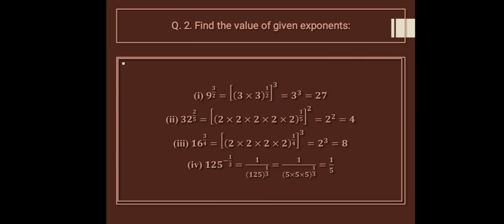9 raised to the power 3 upon 2. We can write 9 as 3 into 3, raised to the power 1 upon 2, then close the bracket and apply power 3. So 1 upon 2 into 3 gives 3 upon 2.